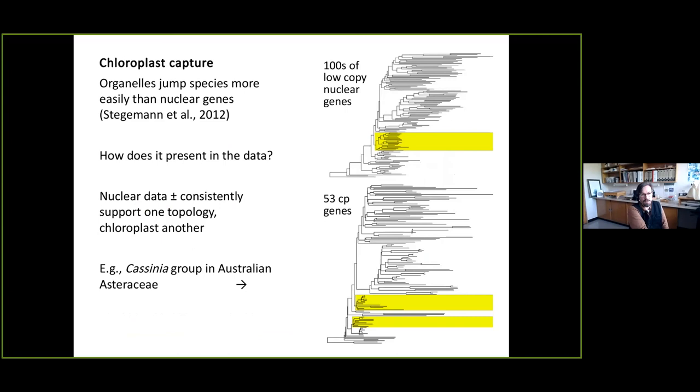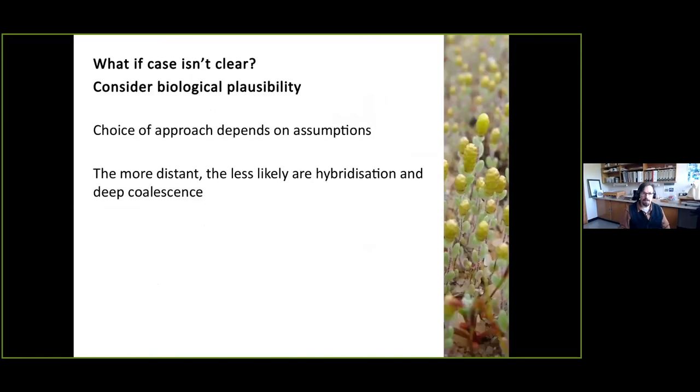Finally, a separate comment on what might be considered a special case of introgression, but is particularly important in phylogenetics. Organelles are known to jump between species more easily than nuclear genes. And in our case, as botanists, we will be concerned about chloroplast, which is then called chloroplast capture by other species lineages. For example, people working on eucalypts will be very familiar with that situation. So how does that present in the data then? We would expect if chloroplast capture is the explanation for the incongruence, we're seeing that nuclear data more or less consistently supports one topology and chloroplast data another.